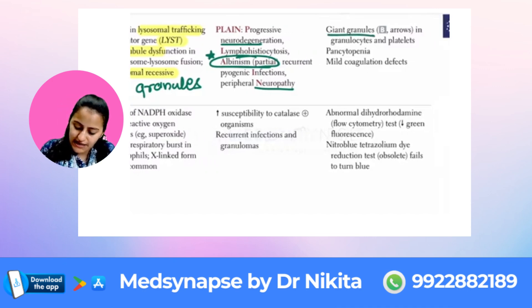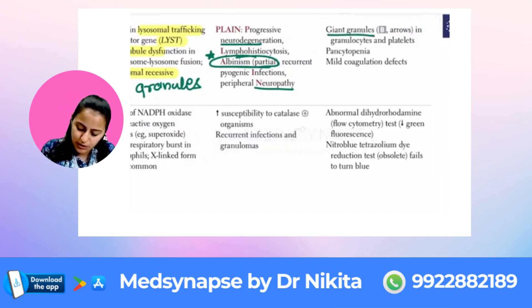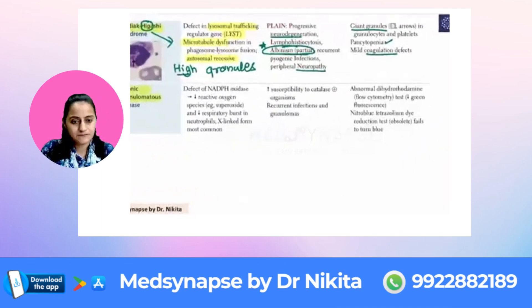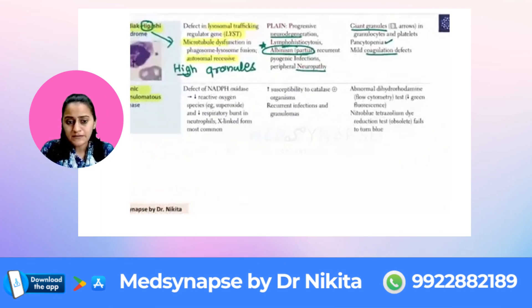Giant granules — a high number of granules — is what we see in Chediak-Higashi, along with pancytopenia and mild coagulation defects.